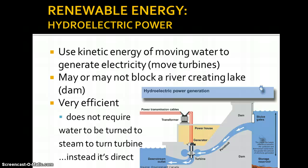Unit 2, Segment 4. We continue with renewable energy resources — hydroelectric and tidal. This is a short one. If we can just get a turbine to turn, then we can connect that to a generator and generate electricity. The two I'm going to show you next will directly turn a turbine, using kinetic energy from moving water to generate electricity. Both hydroelectric and tidal do that.